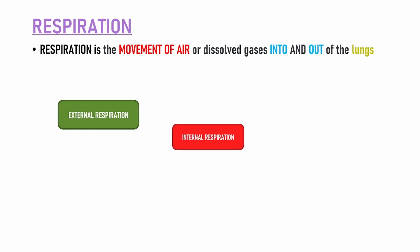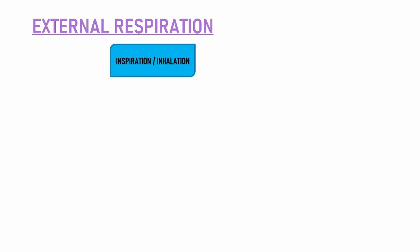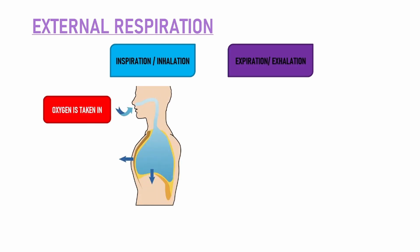Now respiration teen types ke hota hai: external respiration, internal respiration, and cellular respiration. External respiration mein do processes hota hai — that is inhalation or inspiration, and exhalation or expiration. So let's understand what is inhalation: when our body takes in oxygen and it is passed on to the lungs through the trachea. Trachea is a tube-like structure in your throat jahaan se oxygen ya air ko pass on kiya jaata hai to the lungs.